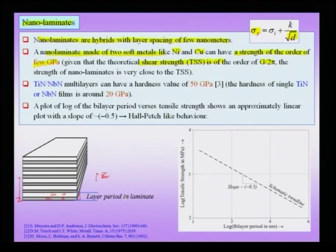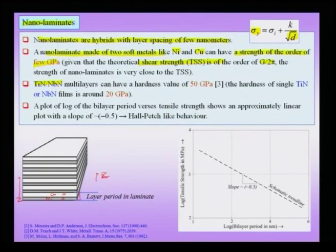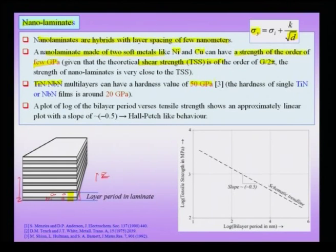This is a very beautiful and strange effect — we are getting very high strength in these nano laminates, even though nickel and copper are very soft metals. In titanium nitride/niobium nitride multilayers, where one layer is titanium nitride and the other is niobium nitride, we can have a hardness value approaching about 50 GPa, which is much higher than the hardness of the individual layers.